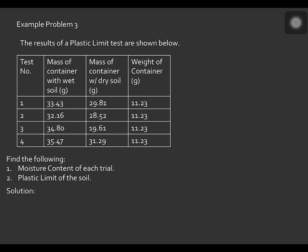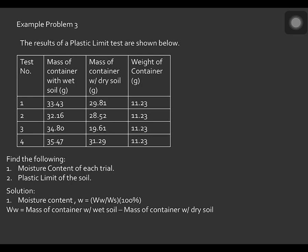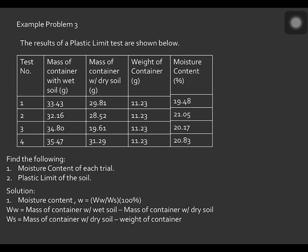To solve, recall that moisture content equals weight of water over weight of soil multiplied by 100%. The weight of water is the mass of container with wet soil minus mass of container with dry soil, and the weight of soil is mass of container with dry soil minus weight of container. Using this formula, the moisture contents are: Test 1 — 19.48%, Test 2 — 21.05%, Test 3 — 20.17%, and Test 4 — 20.83%.